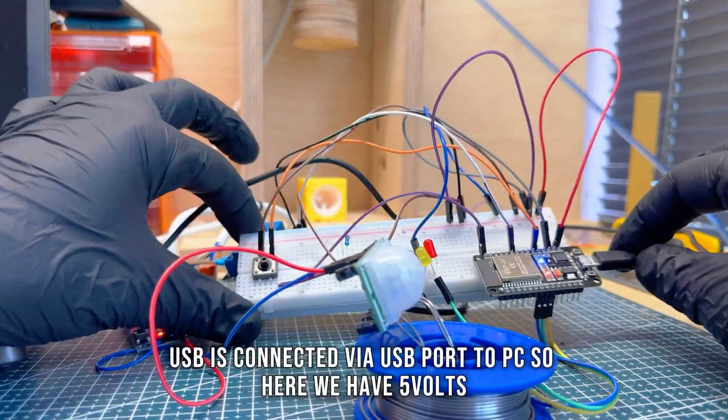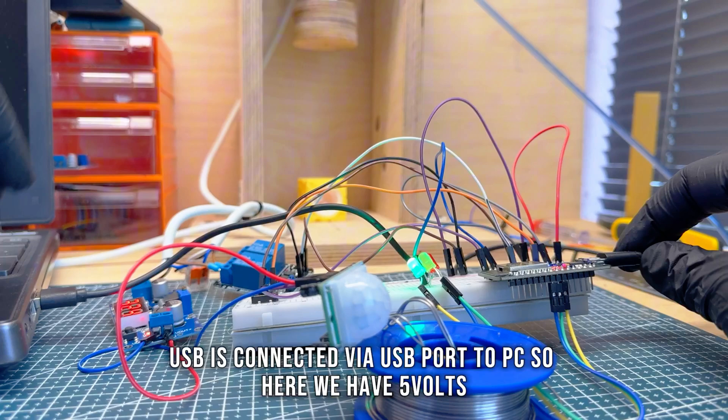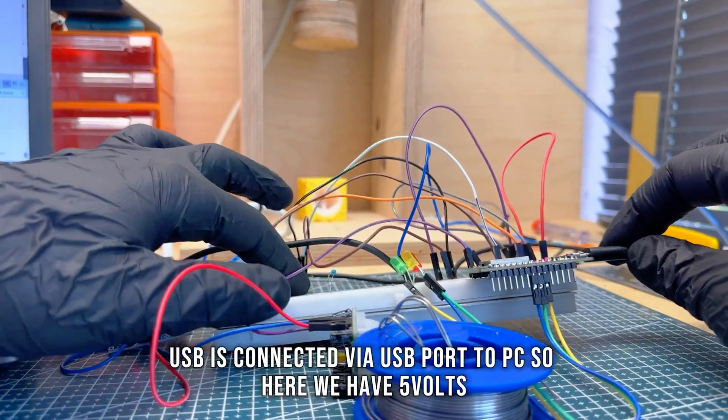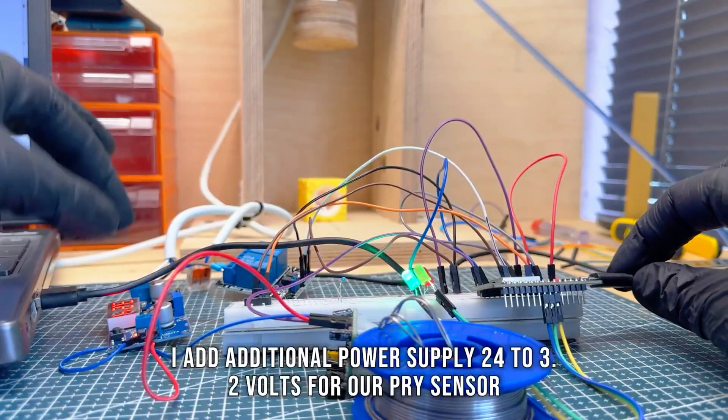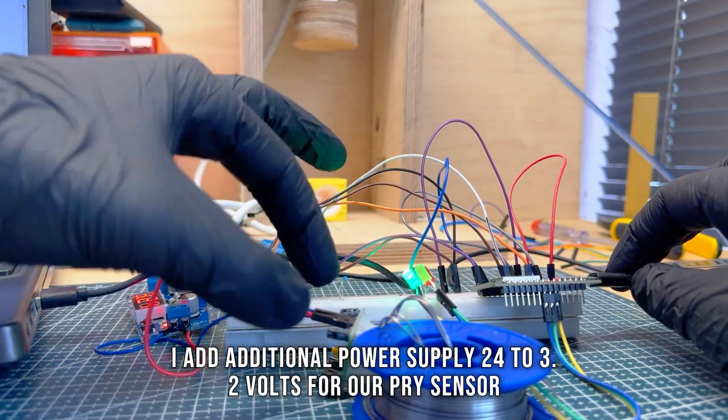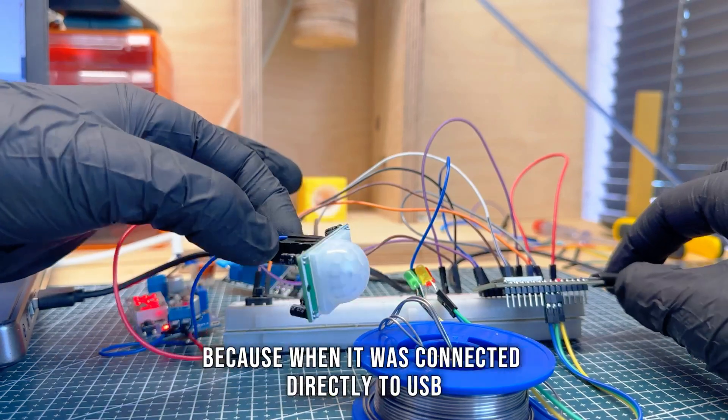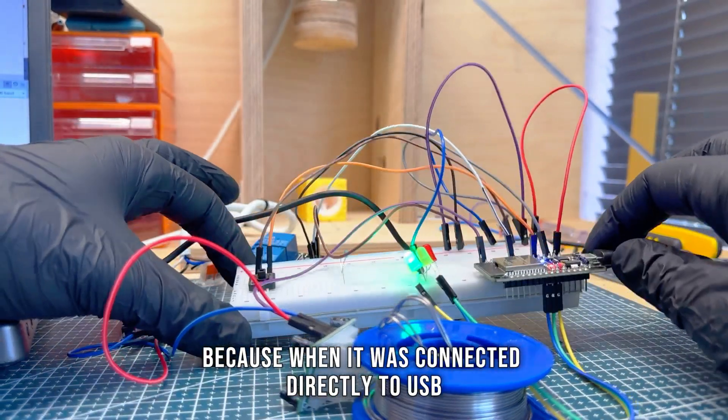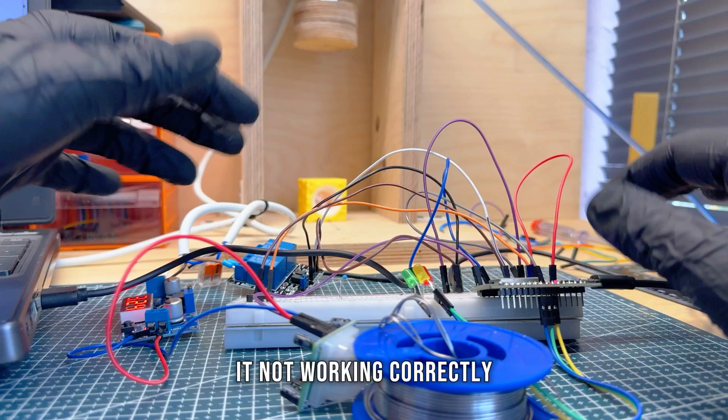ESP is connected. We have USB port to PC, so here we have 5 volts. I added an additional power supply, 24 to 3.2 volts for our PIR sensor, because when it was connected directly to ESP, it was not working correctly.